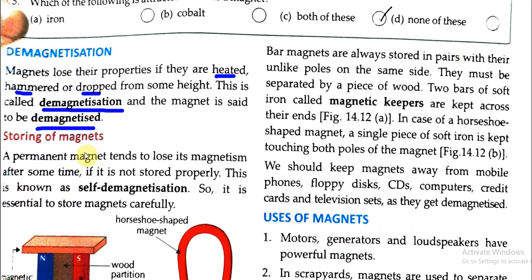We have to keep the magnet and store it very carefully. A permanent magnet tends to lose its magnetism after some time if it is not stored properly. This is known as self-demagnetization — any magnet after some time on its own loses its magnetism, its magnetic property. It is called self-demagnetization because the demagnetization happened on its own.